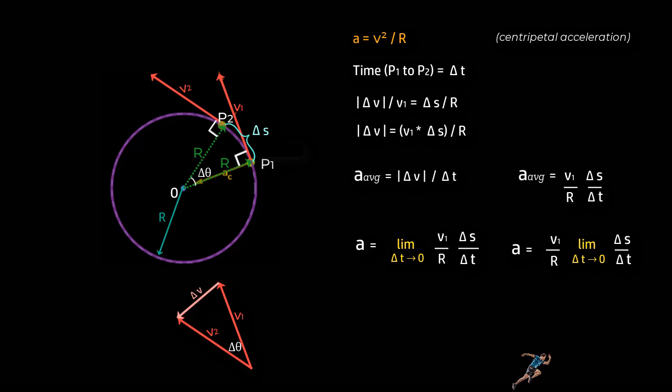Now, we can also say that if delta t is short enough, that it tends to 0, delta s is the distance the particle moves along this curved path. And therefore, delta s upon delta t is nothing but the speed v1 at point p1.